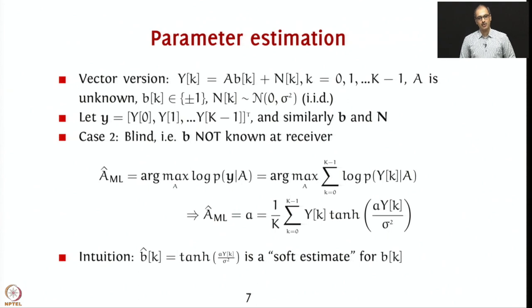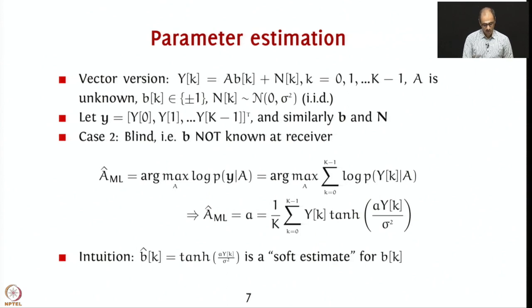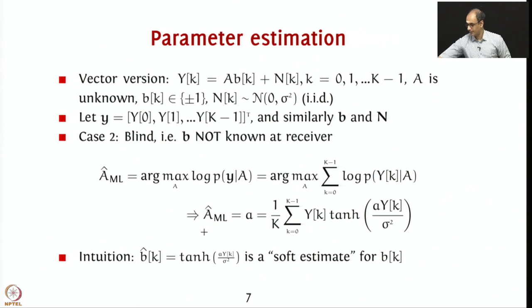In case you have a blind approach, then the maximum likelihood estimate translates to an approach wherein you have to essentially take soft estimates — that is, you want to gather the received values based on reliability to get an optimal maximum likelihood estimate of the amplitude. We will now continue with our discussion today.